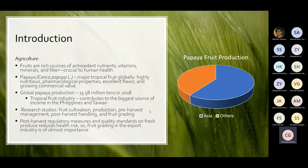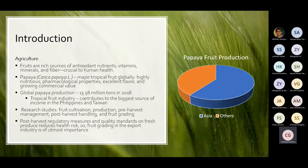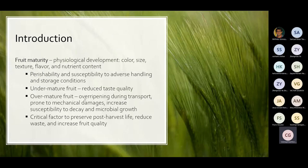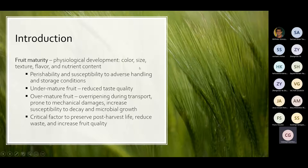Most research studies also include fruit cultivation, production, pre-harvest management, post-harvest handling, and fruit rating. Post-harvest regulatory measures and quality standards on fresh produce imposed by both exporting and importing countries help reduce the risk associated with chemical safety and health to consumers. Fruit rating is of utmost importance in the export industry. Fruit maturity evaluates the physiological development of a fruit when it ripens or continues to ripen even after harvesting, and includes changes in color, size, texture, flavor, and nutrient content. Perishability and susceptibility to adverse handling and storage conditions are also dependent on harvest maturity, and this is a critical factor to preserve post-harvest life, reduce waste, and increase fruit quality.